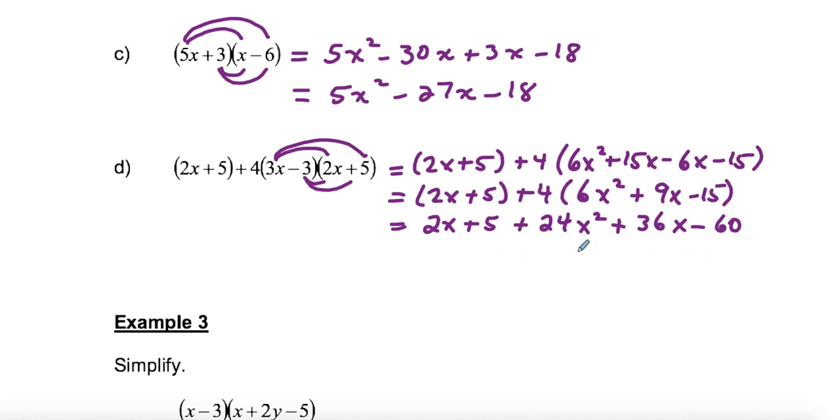And then I look down and I do see some like terms there. So 24x squared. But then I see I have a 2x and a 36x. So I'd have 38x. And then 5 minus 60. So I'd end up with negative 55. And then that's my final answer.